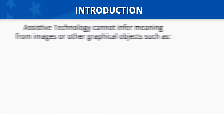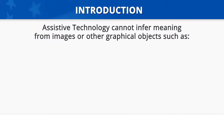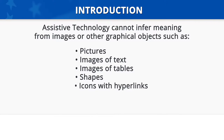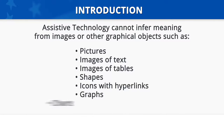Introduction. Screen readers and other assistive technology cannot infer meaning from images or other graphical objects like pictures, images of text, images of tables, shapes, icons with hyperlinks, graphs, charts, etc. Therefore, you must take additional steps to ensure this type of content is accessible.